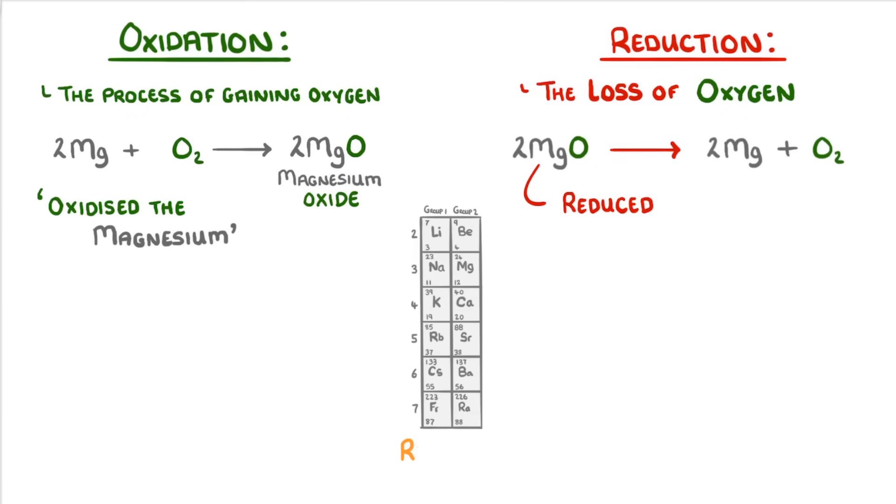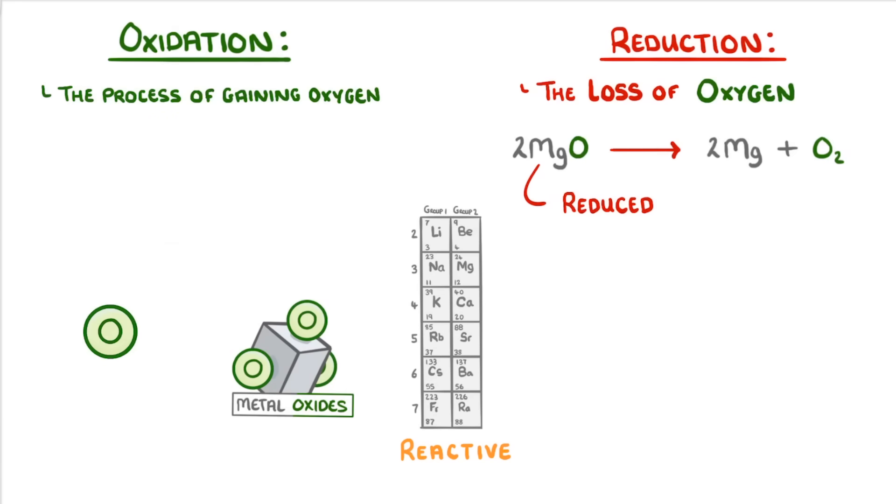Now, as most metals are fairly reactive, when they're exposed to oxygen they'll oxidize into a metal oxide. For example, iron naturally reacts with the oxygen in the air to form iron oxide, which is more commonly known as rust.